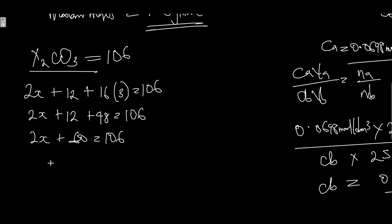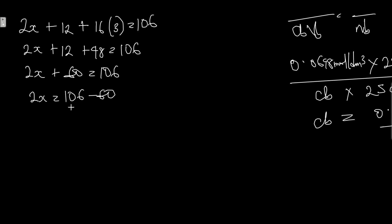Taking like terms, we have 2X equals 106 minus 60. When you subtract, you have 2X equals 46.